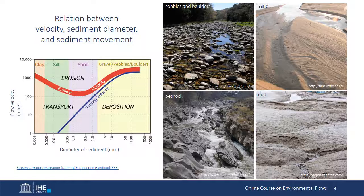Now let's look specifically at the influence of flow velocity on the erosion, deposition, and transport of different grain sizes of sediment. The graph shows diameter of sediment on the x-axis and flow velocity on the y-axis — both scales are logarithmic. The wide red curve shows the velocity required to erode different grain sizes, and the thin blue line shows the velocity below which sediment grains will be deposited. Together, the erosion and settling curves delineate zones of erosion, transport, and deposition on the graph.